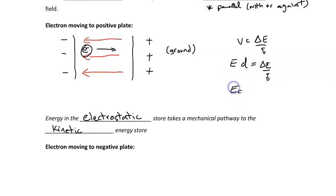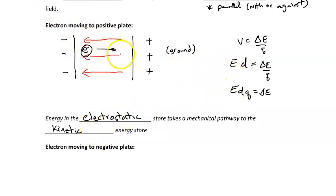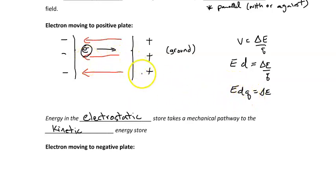So E times D times Q equals the change in energy. If we want to know how much energy this electron is transferring from the electrostatic store to the kinetic store, it's the electric field strength times the distance the charge is traveling times Q, the charge on the electron. This distance is parallel to the field only — so in this case, going to the positive plate.